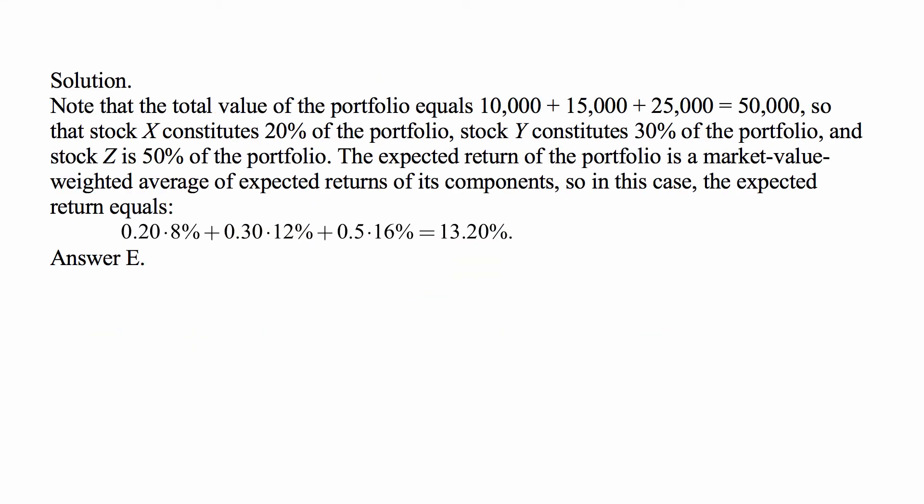The solution relies on that observation. We have a total portfolio value of 50,000 — 20 percent in stock X, 30 percent in stock Y, 50 percent in stock Z — and we take the weighted average of the expected returns: 0.20 times 8 percent, plus 0.30 times 12 percent, plus 0.50 times 16 percent, and that equals 13.20 percent, answer E.